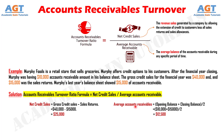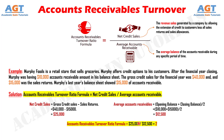Now we have both values of net credit sales and average accounts receivable. So we can now calculate Murphy's accounts receivables turnover ratio by dividing net credit sales by average accounts receivable: $25,000 in net credit sales divided by $12,500 in average accounts receivable.